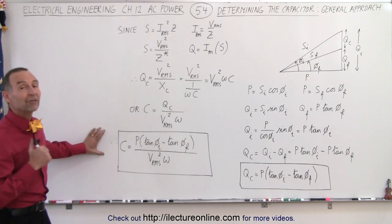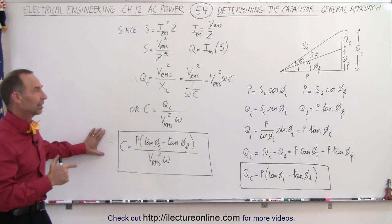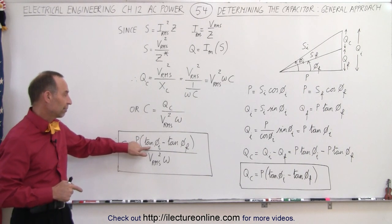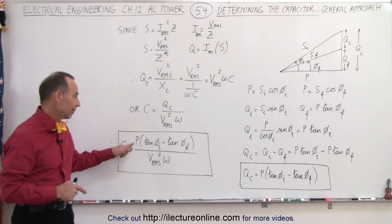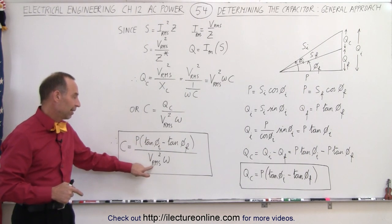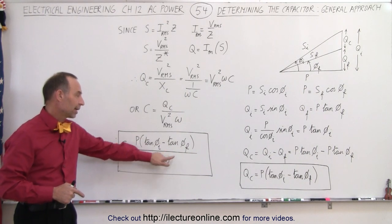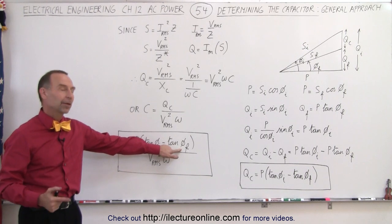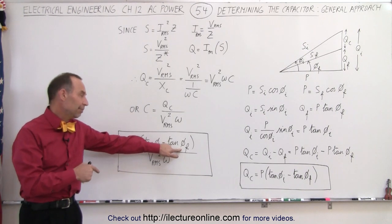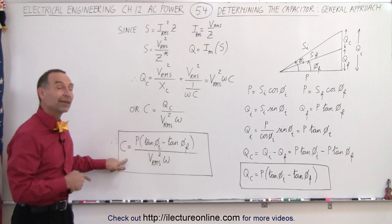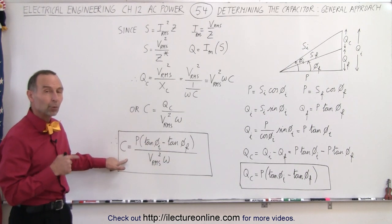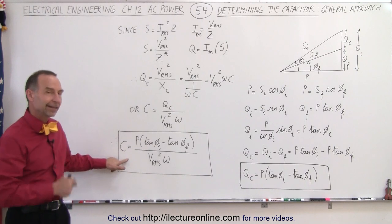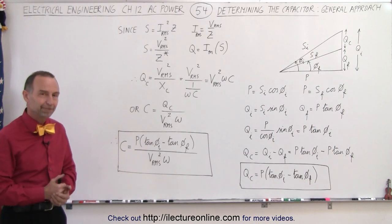We now have an equation to calculate the capacitance: given an initial impedance, a power, V_rms, and ω, we can plug in a desired final phase angle and calculate which capacitor value will achieve that. And that is how it's done.